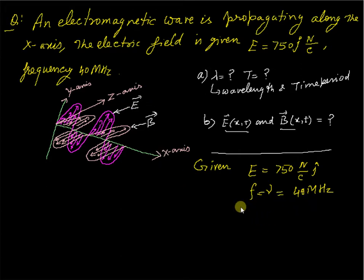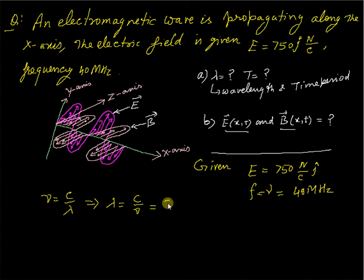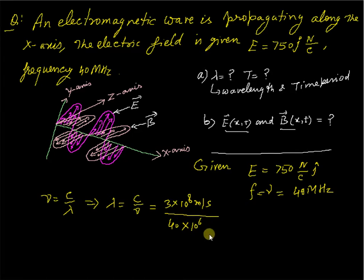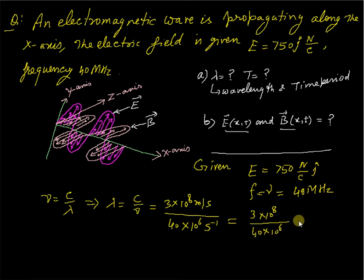We have to find lambda (wavelength) and T (time period), and then the electric and magnetic fields. For part (a), lambda: we know that frequency nu equals c divided by lambda, so lambda equals c divided by nu. Speed of light is 3×10^8 m/s and frequency is 40 MHz = 40×10^6 per second. So lambda = 3×10^8 / 40×10^6, which gives approximately 7.5 meters.